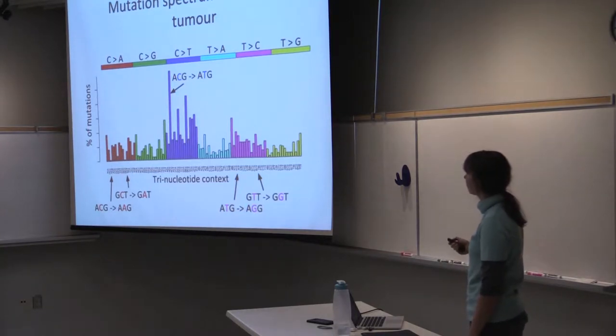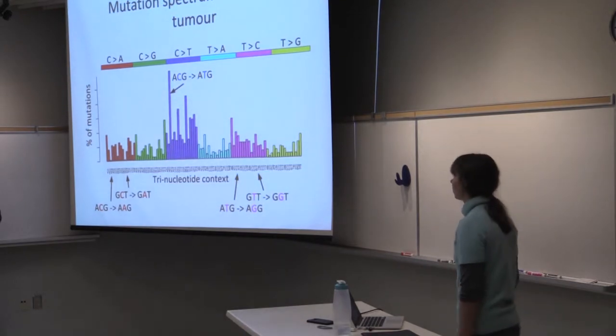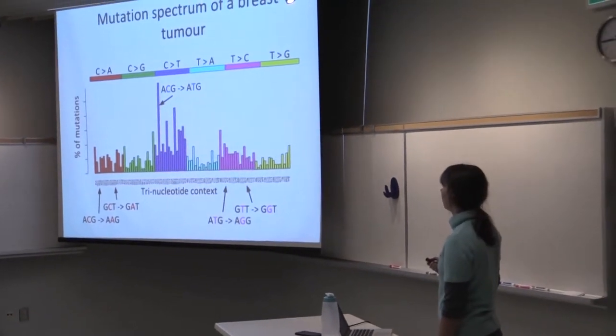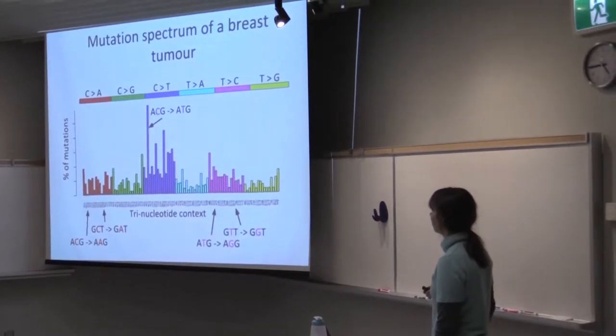And if we look at trinucleotide context of the mutation, we have four combinations of four possible nucleotides before the mutation and four possible nucleotides after the mutation. So we have 16 possible combinations of trinucleotide context multiplied by six possible mutations.